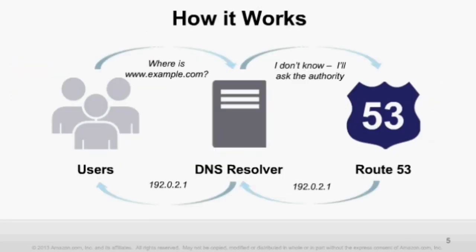DNS works by translating domain names into IP addresses, enabling users via their web browsers or other clients to access your website or web application. Route 53 returns the authoritative responses to these DNS queries. By dynamically incorporating logic to return different IP address answers, Route 53 enables architectures that allow you to run in multiple locations around the world, have redundant locations, and dynamically respond to failure events by vending different IP addresses, thereby routing end users intelligently to locations where your application is up and running.